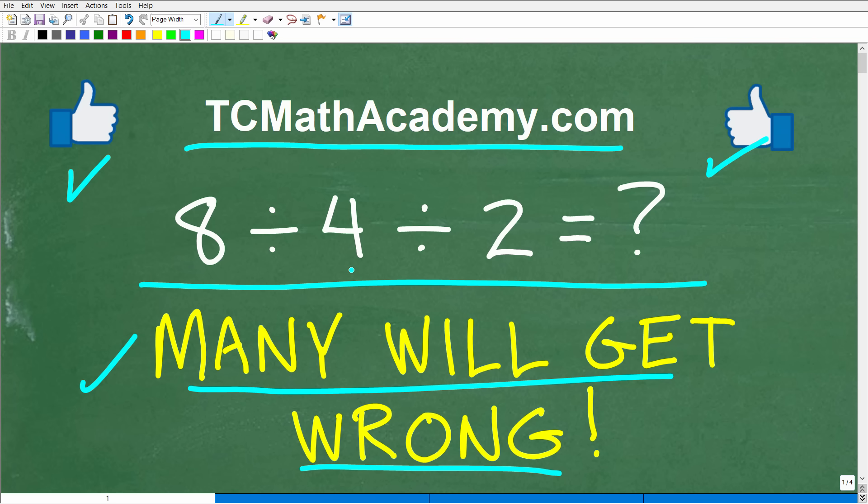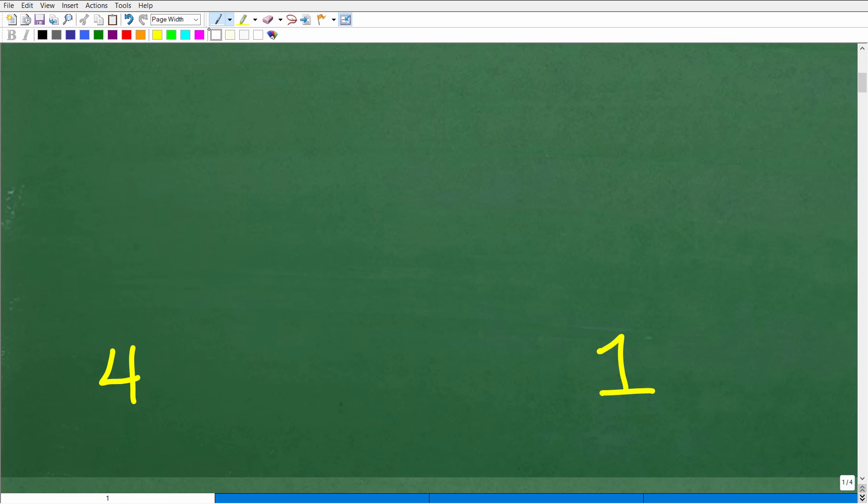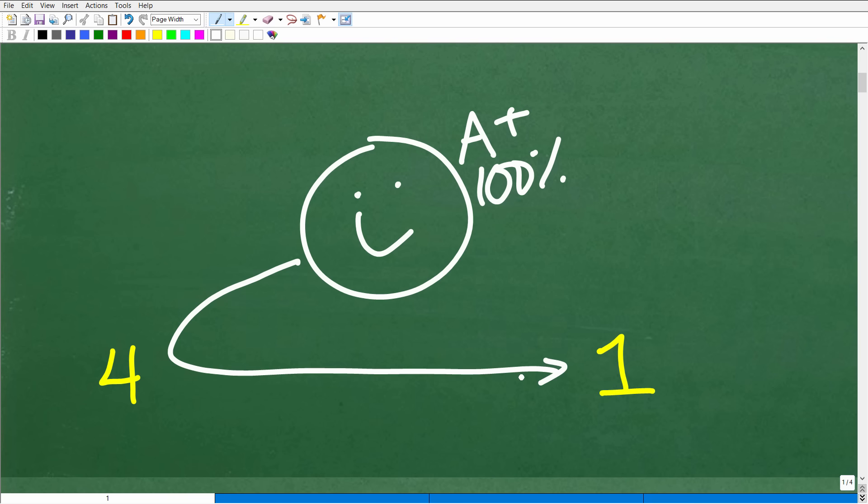Okay, so 8 divided by 4 divided by 2. What is the answer? Well, let's go ahead and take a look at it right now. So I have two choices here. Probably 99% of you have one answer or the other. So we're going to award the nice little happy face, an A plus and 100% to the correct answer. So what is that correct answer? It is no, it is not 4. It is 1. 1 is the correct answer.